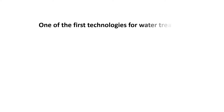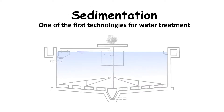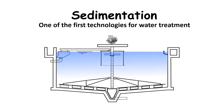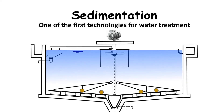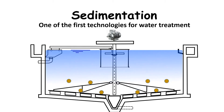One of the first technologies for drinking water and wastewater treatment is sedimentation. Conventional sedimentation often utilises large basins called clarifiers to settle out suspended solids by gravity. However, depending on solid density and size, settling by gravity may take a long time and therefore requires large clarifiers.